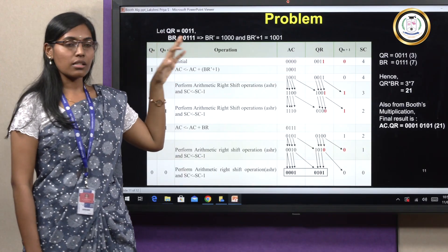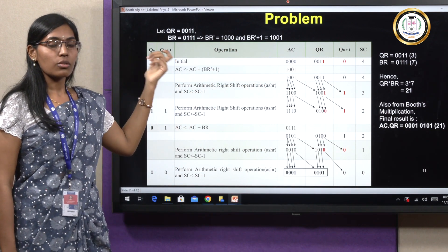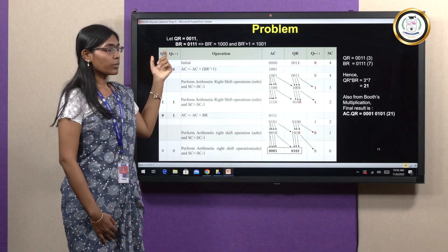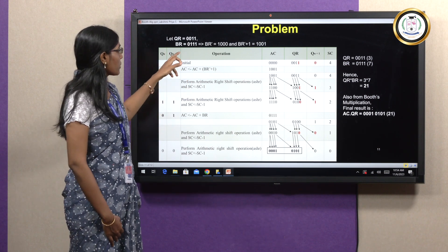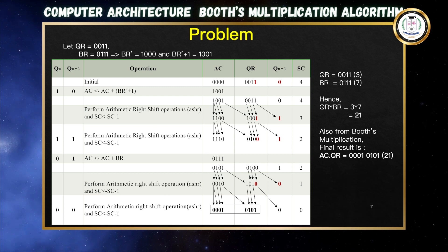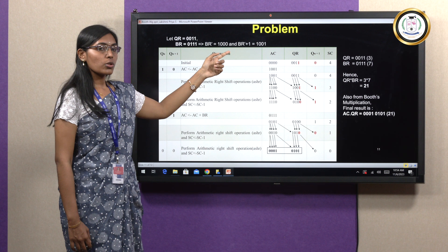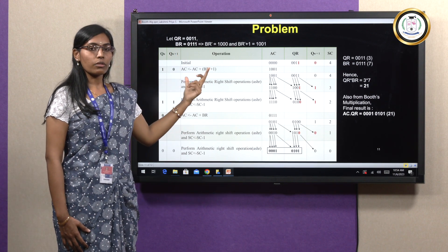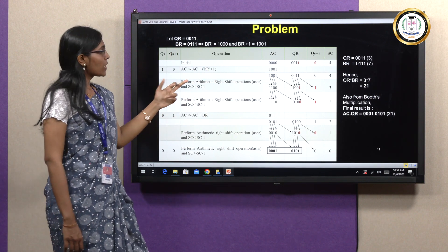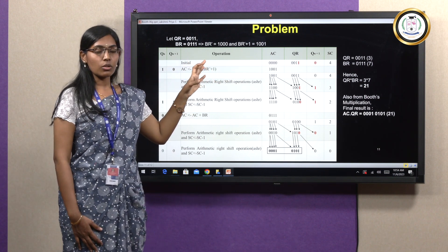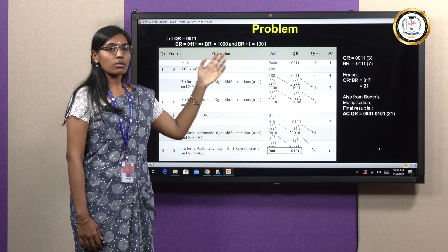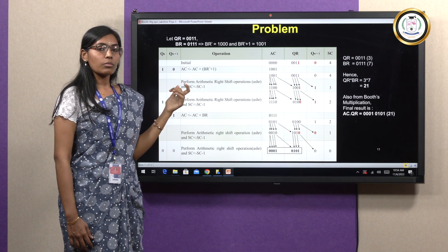Setting up the initial state: QR = 0011 (value 3), BR = 0111 (value 7), 2's complement of BR = 1001. AC = 0000, QN+1 = 0, and sequence counter SC = 4 (since we have 4-bit registers). We now proceed with Booth's algorithm.